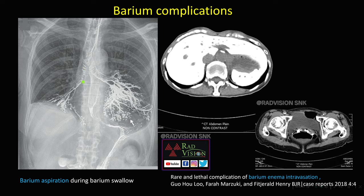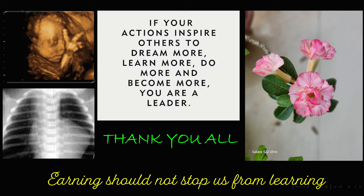Now we will see a few complications. During this barium swallow, there is aspiration of barium into the trachea and tracheobronchial tree, with opacification of the bronchial segments — this is barium aspiration. Another rare complication is barium enema intravasation, where barium is noted in the liver, spleen, and pouch of Douglas. Thank you all.